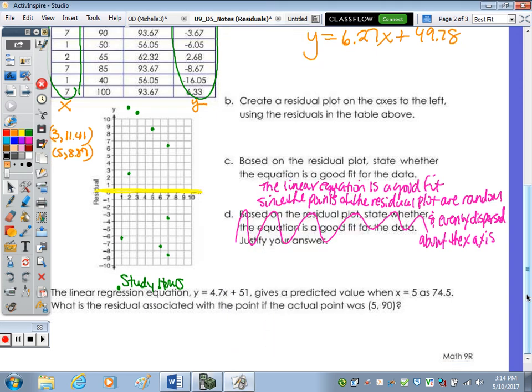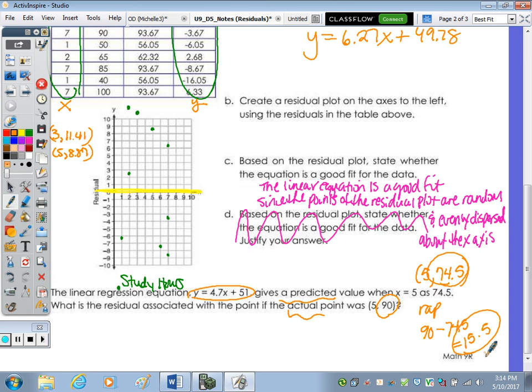Last part. So there's a linear regression equation. For this equation, there's a predicted value of 74.5. What is the residual when the actual point was this? All you do is take the two Y values and do what with them? Subtract. But what's the order? Think RAP. Actual, 90 minus 74.5, the residual is going to be - count five up to get 75, and then how far from 75 to 90? 75 and five is 80, 15.5.